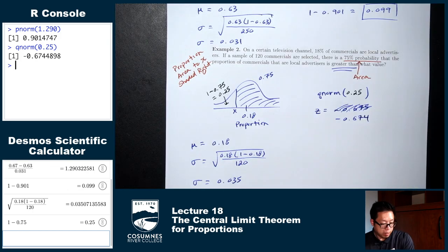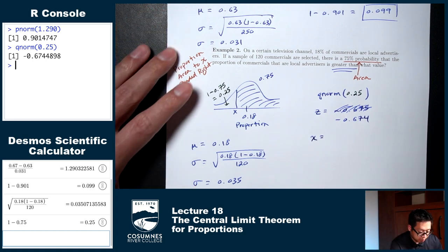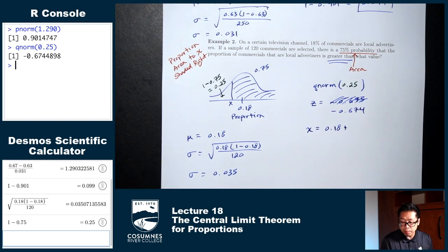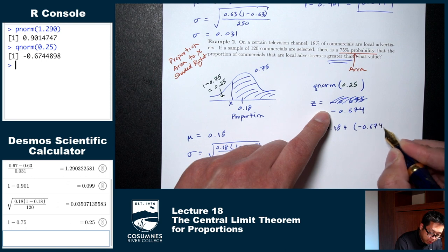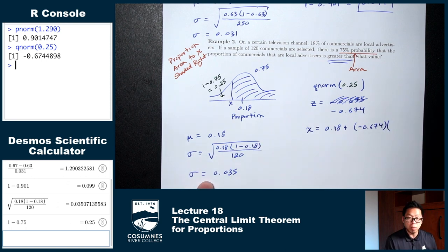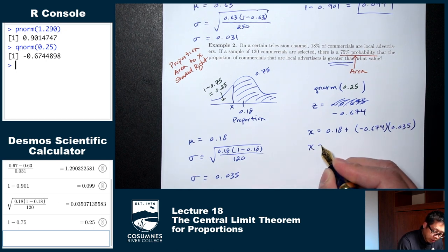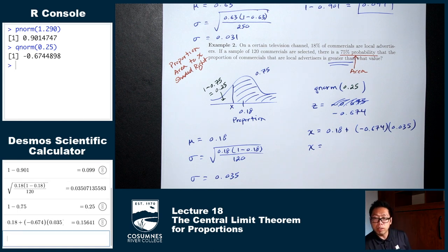Last step: z-to-x using the x formula. x = μ + z × σ = 0.18 + (−0.674) × 0.035 = 0.156. That is our final answer.